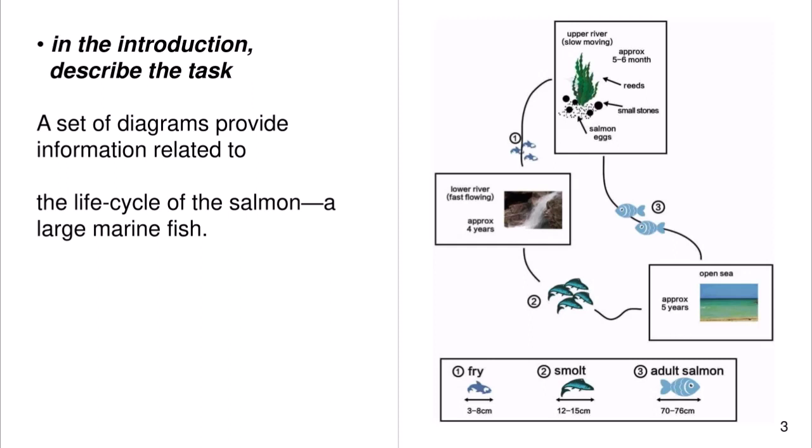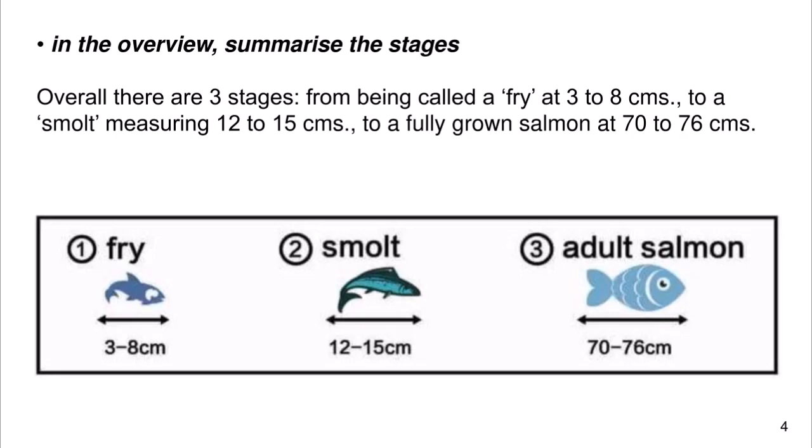In the introduction, describe the task: 'A set of diagrams provide information related to the life cycle of the salmon, a large marine fish.' In the overview, summarize the stages: 'Overall, there are three stages — from being called a fry at 3 to 8 centimeters, to a smolt measuring 12 to 15 centimeters, to a fully grown salmon at 70 to 76 centimeters.'